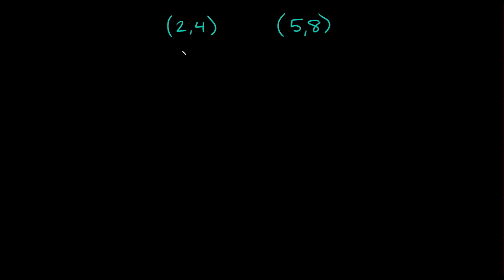So the two points that we're given are (2, 4) and (5, 8). Now to write an exponential function, we want to use the equation y is equal to a times b raised to the x.